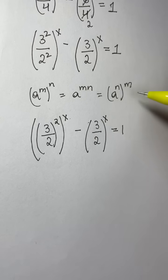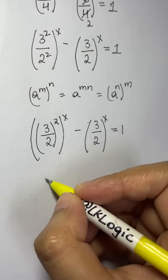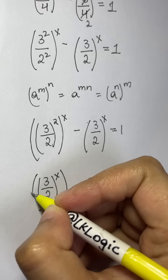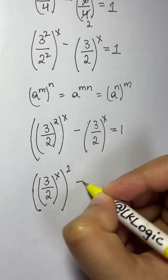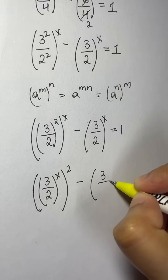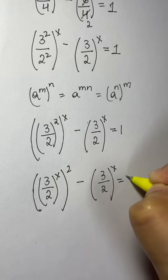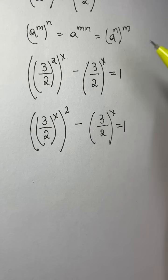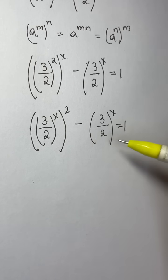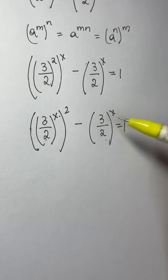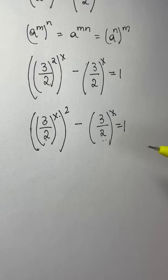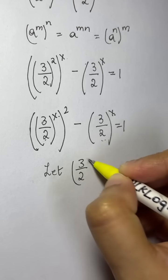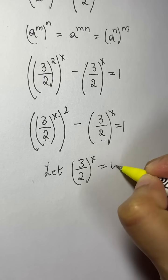Now I apply the law to interchange the powers. So I have (3/2 to the power of x) whole to the power of 2, minus (3/2) to the power of x equals 1. We have arrived at the same base (3/2)^x throughout, so we can substitute. Let u equal (3/2) to the power of x.